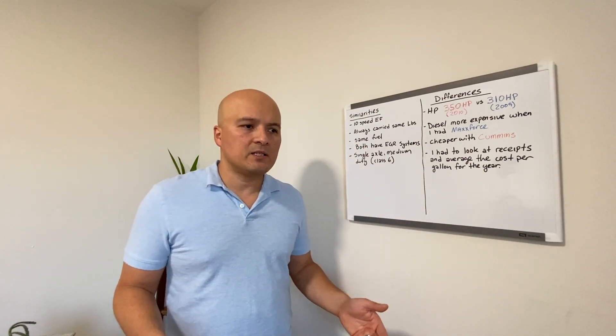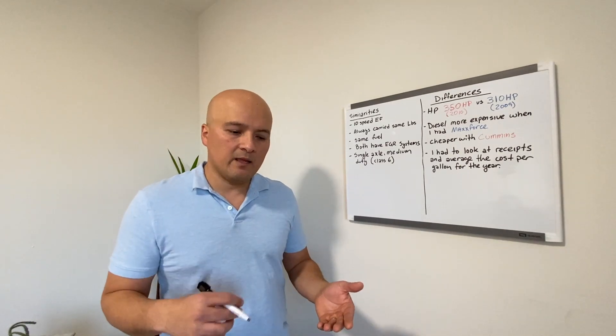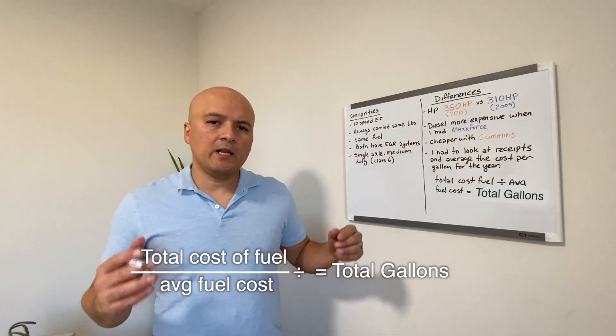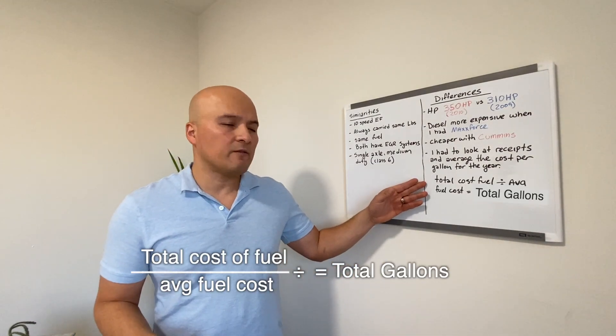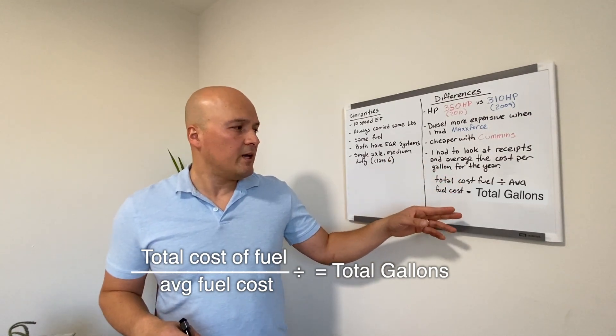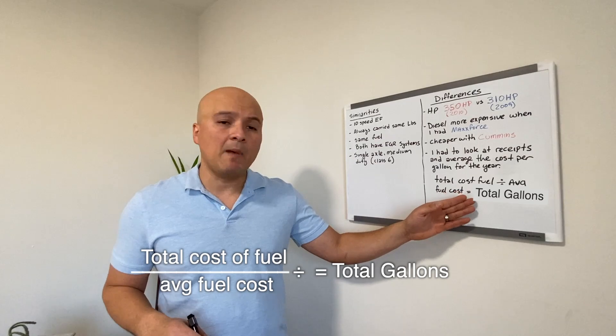Now what I did was, every month or so, I looked at the price per gallon for that month. And at the end of the year, I averaged it out. So when I looked up the total cost of fuel that I burned for that year, and I divided it by the average fuel cost for that year, I got my miles per gallon.